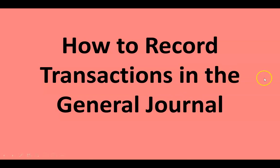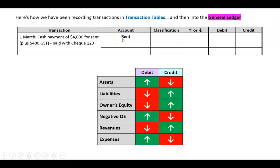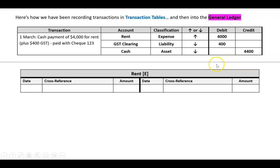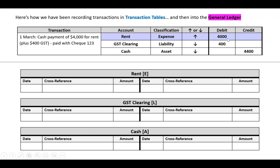Now we know what the general journal is, let's look at how to record transactions in it. We had been using transaction tables where we listed accounts affected — in this case a payment for rent plus GST. Rent expense went up (debit), GST clearing liability went down (debit), and cash as an asset went down (credit).